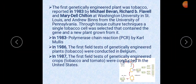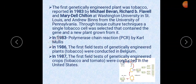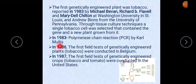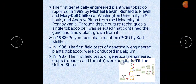In 1983, the Polymerase Chain Reaction (PCR) was developed by Kary Mullis. In 1986, the first field tests of genetically engineered plants — tobacco — were conducted in Belgium. In 1987, the first field tests of genetically engineered crops — tobacco and tomato — were conducted in the United States.